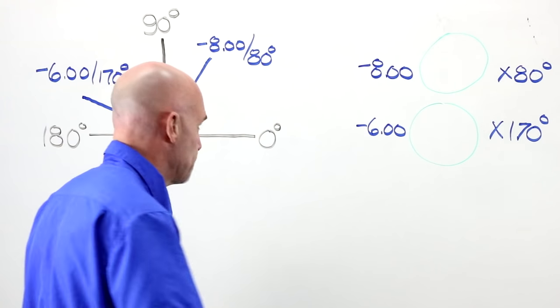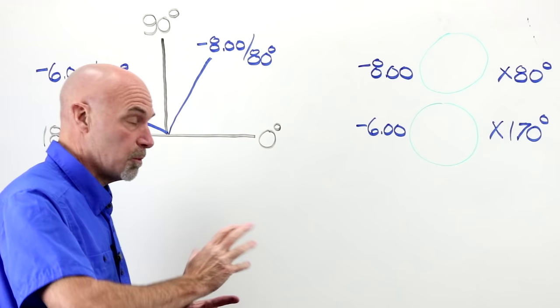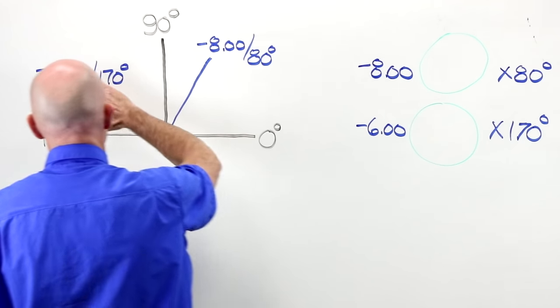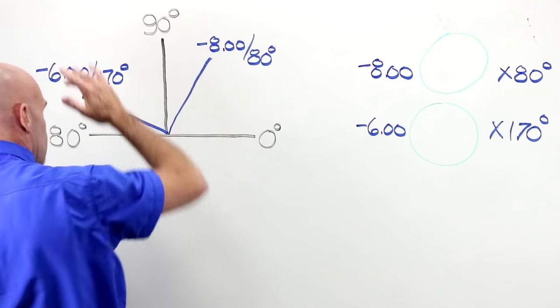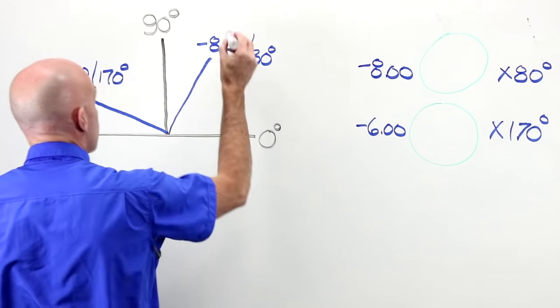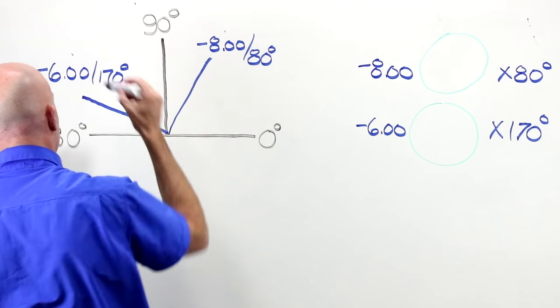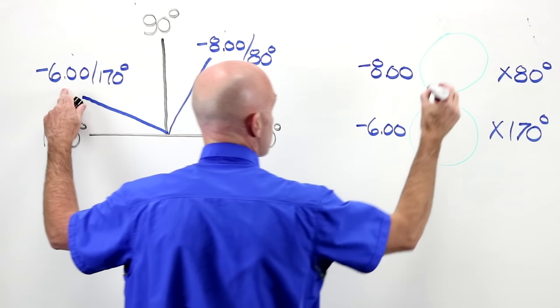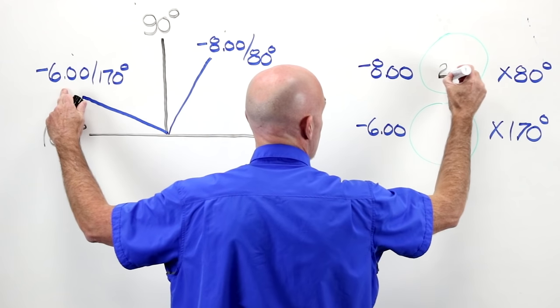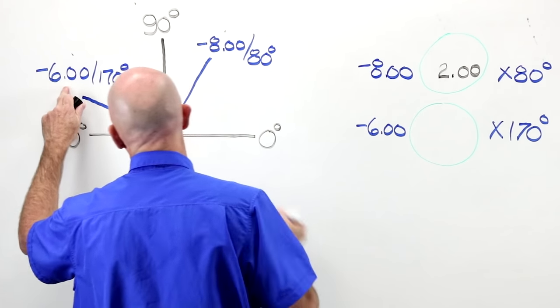So what does that leave us? That leaves us two holes that we need to fill in. Our cylinder value. Our cylinder value and our cylinder sign. Where do those come from? Our cylinder value, just like the lensometer wheel, is the distance we're going to travel from six to eight and from eight to six.